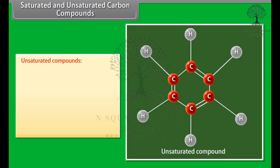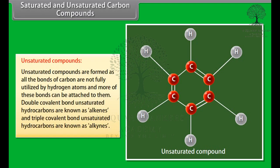Unsaturated compounds. Compounds of carbon and hydrogen that contain double or triple covalent bonds between the carbon atoms are called unsaturated hydrocarbons. These are formed as all the bonds of carbon are not fully utilized by hydrogen atoms and more of these bonds can be attached to them. Double covalent bond unsaturated hydrocarbons are known as alkenes and triple covalent bond unsaturated hydrocarbons are known as alkynes.